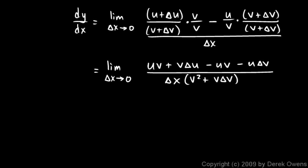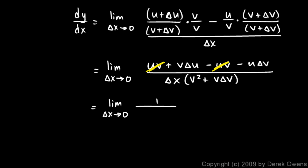The uv terms cancel out, and we can write this as: the limit as delta-x approaches 0 of 1 over (v squared plus v·delta-v), times (v·delta-u minus u·delta-v) over delta-x.